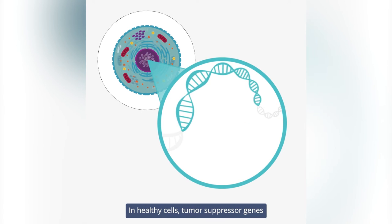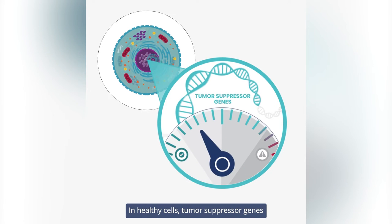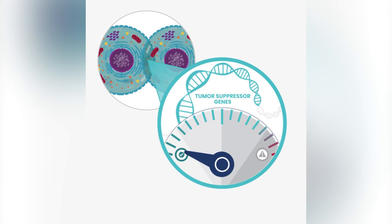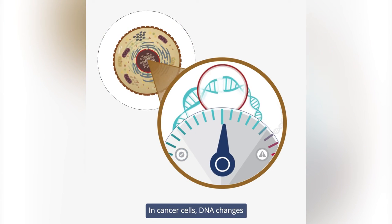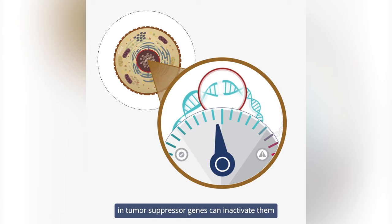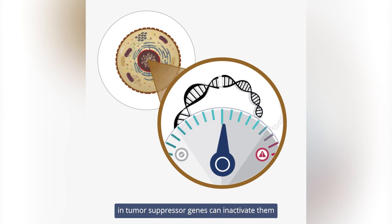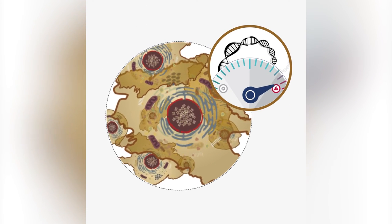In healthy cells, tumor suppressor genes slow or stop cell growth. In cancer cells, DNA changes in tumor suppressor genes can inactivate them and lead to uncontrolled cell growth.